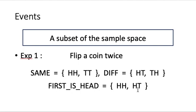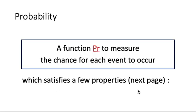Now, once we have defined events, we can talk about probability. Probability is a function — let us denote this by Pr. This function measures the chance for each event to occur. We require this function Pr to satisfy some properties. We will see it needs to satisfy three properties on the next page.